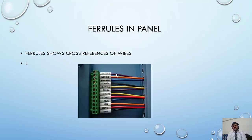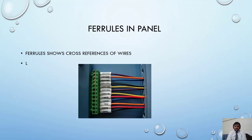Another thing is that at the end of the sheet you will find a termination schedule or terminal assignment. In this termination schedule, the terminals are mentioned, and against each terminal the source, the wire connected from, and the destination from the terminal is shown very clearly. This is how ferrules work, and you should know about that.